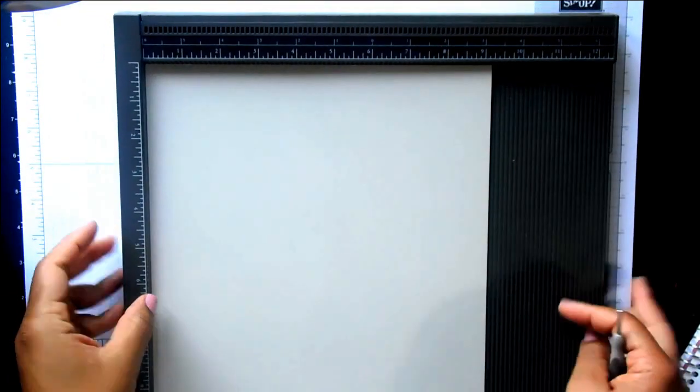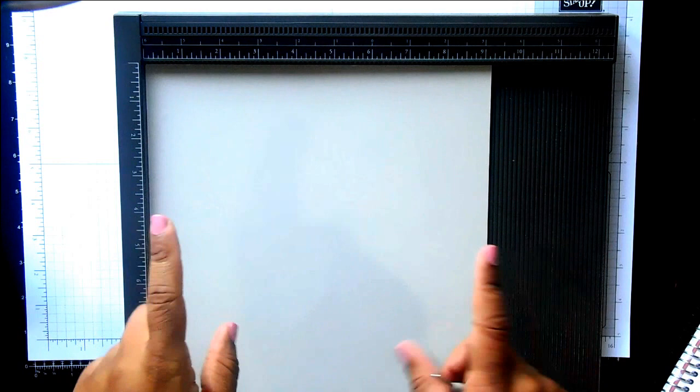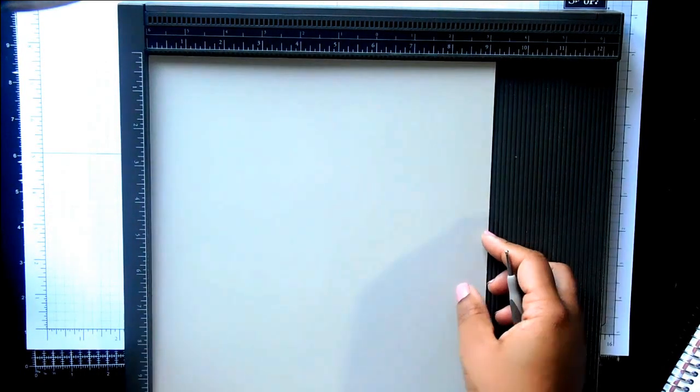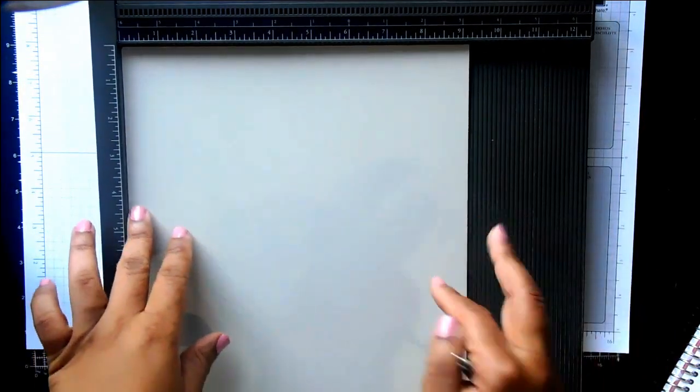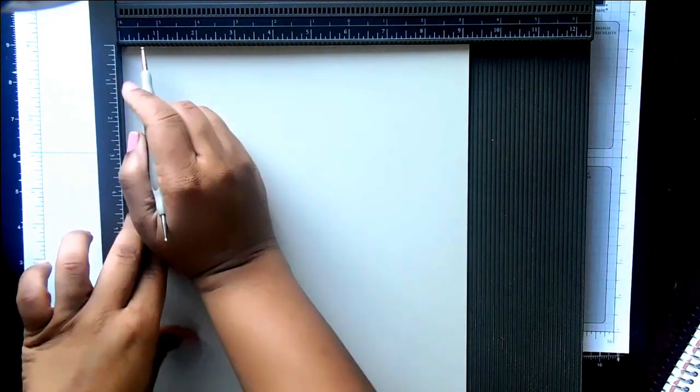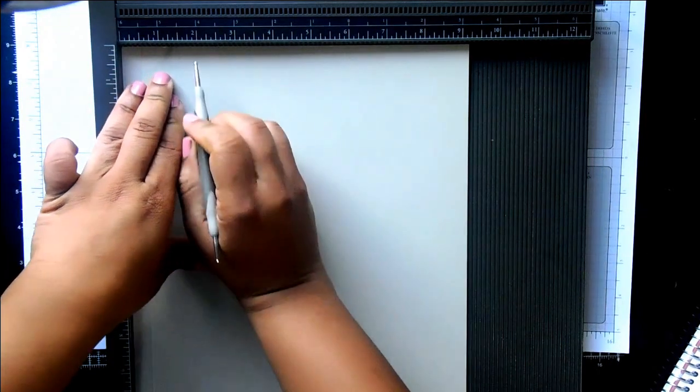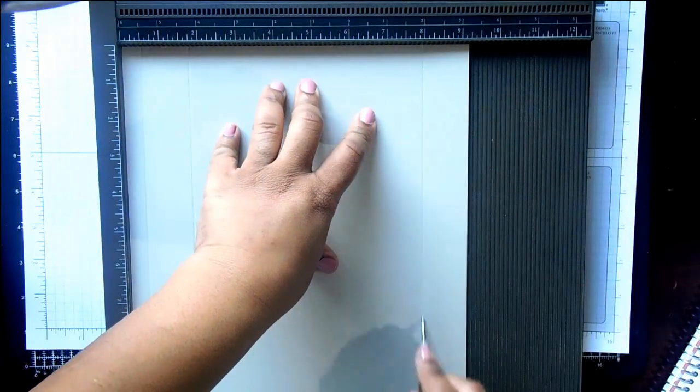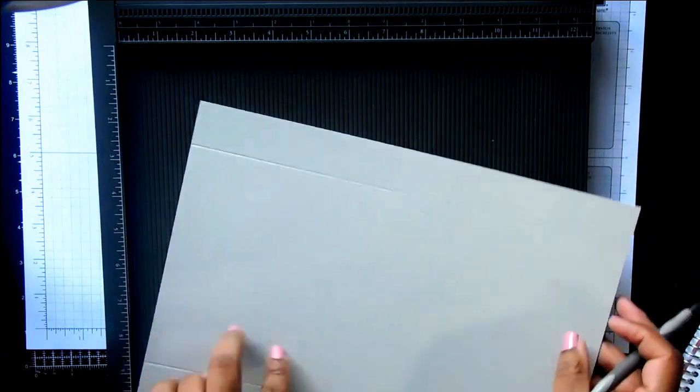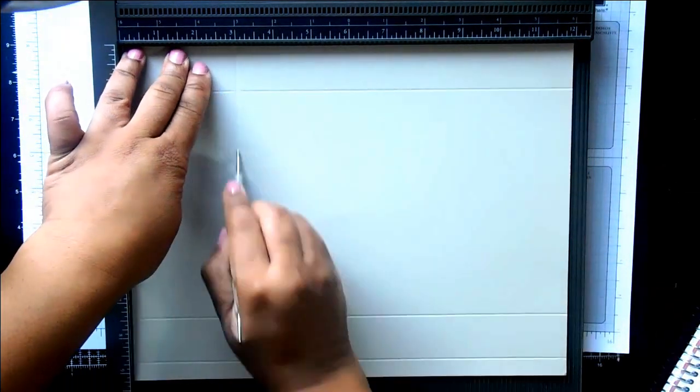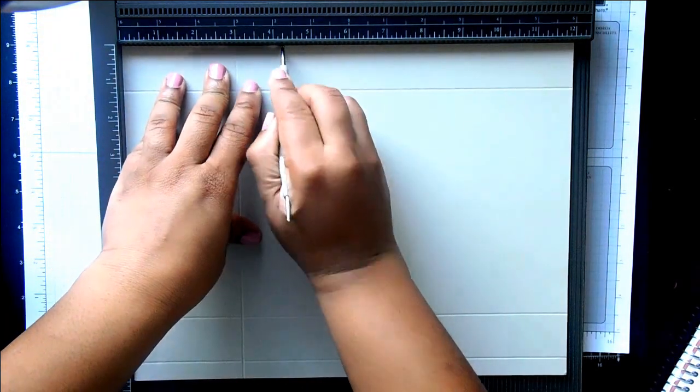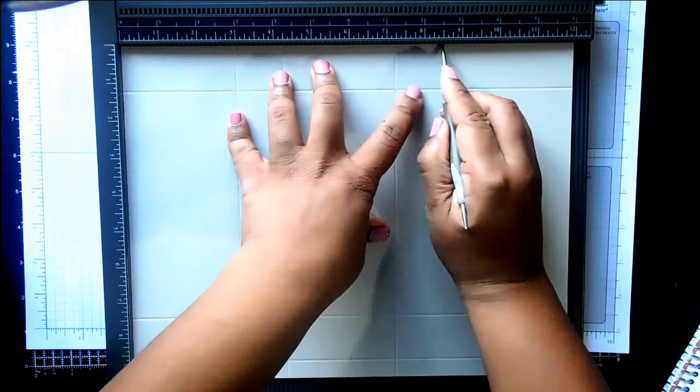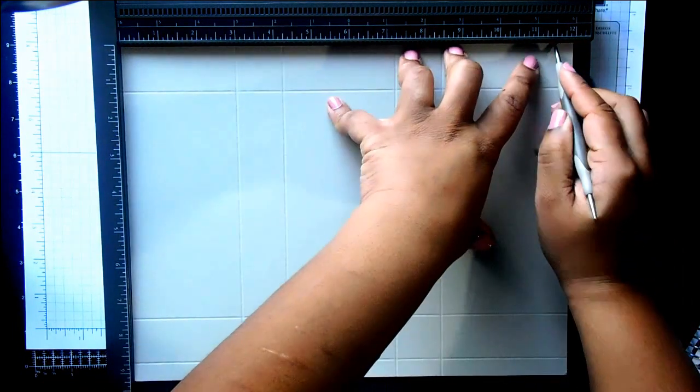So to make our box, we're going to start with a piece of Sahara Sand cardstock. And that is 9 1/4 inches by 12. So on the 9 1/4 inch side, you're going to score at 1/2 inch, at 1 3/4 of an inch, and then at 8 inches. And then you're going to turn it and score at 3 inches, 4 1/4, 7 1/4, 8 1/2, and 11 1/2.